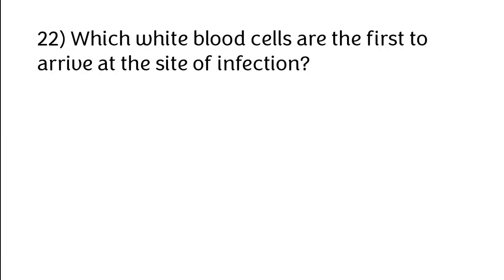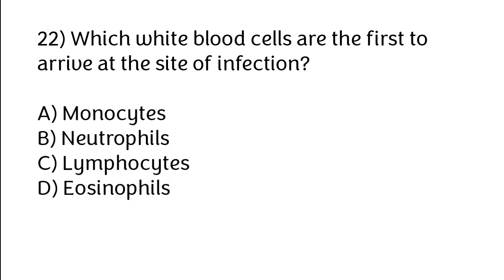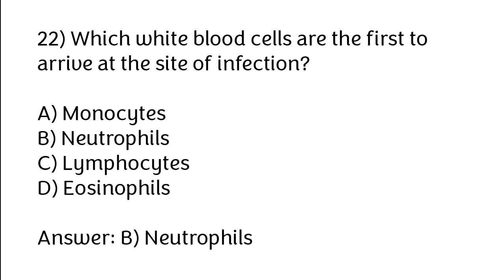Which white blood cells are the first to arrive at the site of infection? Options: Monocytes, neutrophils, lymphocytes, eosinophils. The correct answer is Option B: Neutrophils.